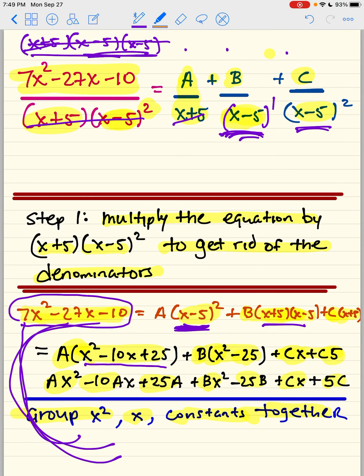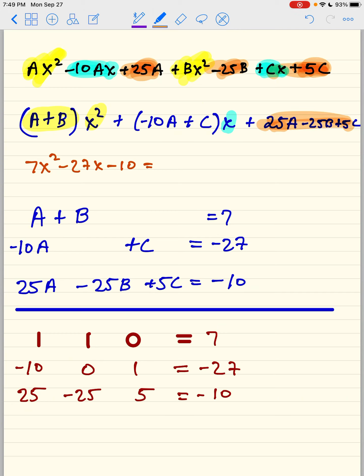Now I went back to this page, and remember what the question is: 7x squared minus 27x minus 10, and I'm basically just lining them up. A plus B, x squared, must equal to 7. Negative 10A plus C must equal to negative 27, because that's the number in front of x. That's the number in front of x squared. And this must equal your constant.